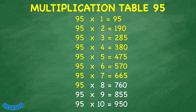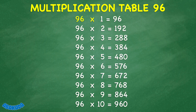95 times 8 equals 760. 95 times 9 equals 855. 95 times 10 equals 950. 96 times 1 equals 96. 96 times 2 equals 192. 96 times 3 equals 288. 96 times 4 equals 384. 96 times 5 equals 480.